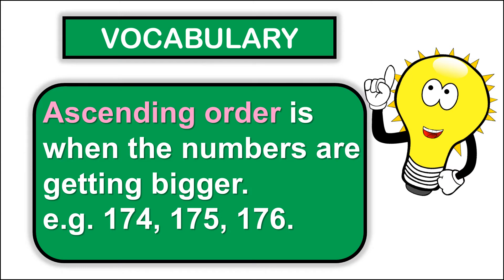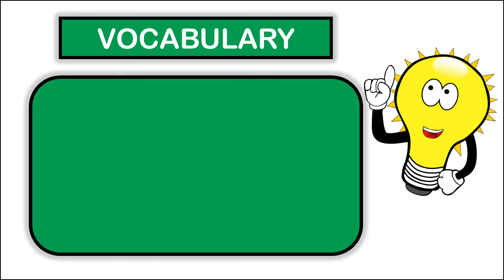Let's look at some vocabulary. Ascending order is when the numbers are getting bigger. Example: 174, 175, 176. We start with the smallest number and end with the biggest number.